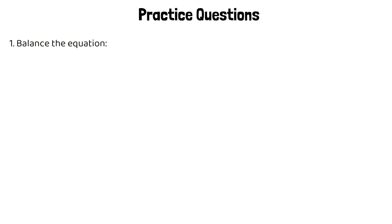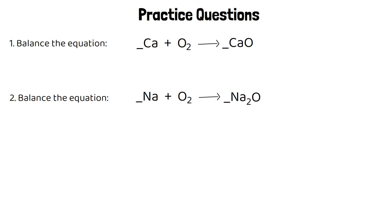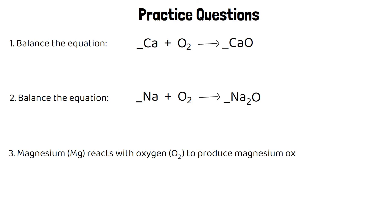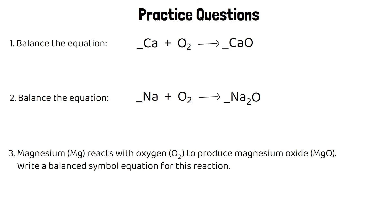Here are some practice questions for you to try. There are two equations to balance — you just need to put numbers in front of the substances that have gaps in front of them. For the final question, magnesium reacts with oxygen to produce magnesium oxide. You have the formulas there and you need to write the balanced symbol equation for the reaction. Pause the video and give these a go.